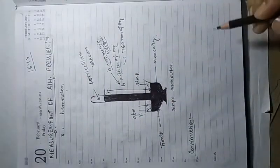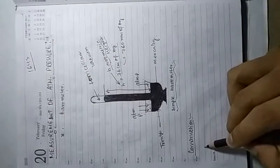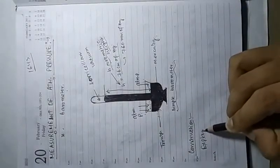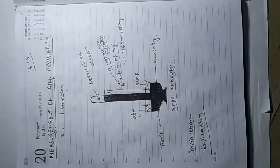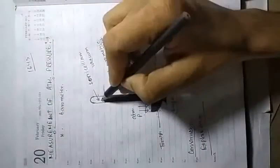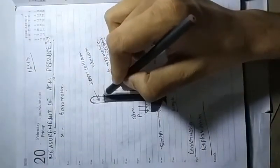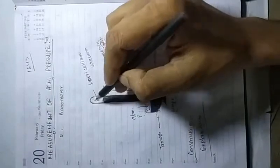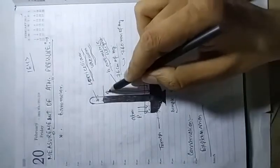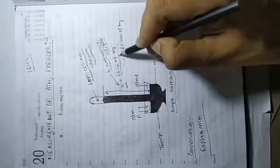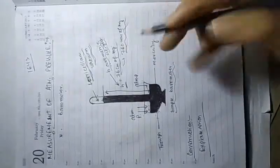Above the mercury in the tube there is a vacuum — no air — known as the Torricelli vacuum. The height of mercury that remains is called the barometric height, which is generally 76 centimeters of mercury, or 760 millimeters, or 760 torr.